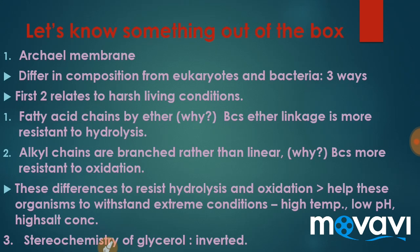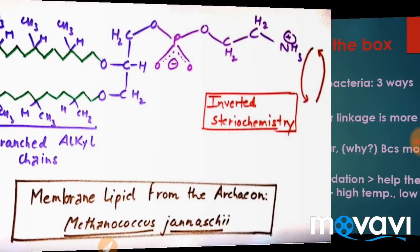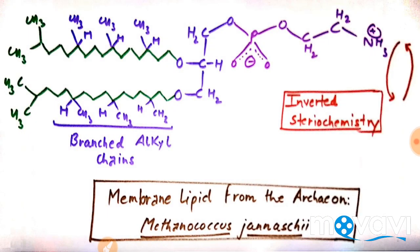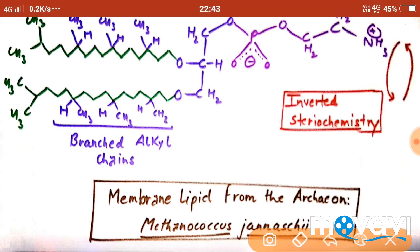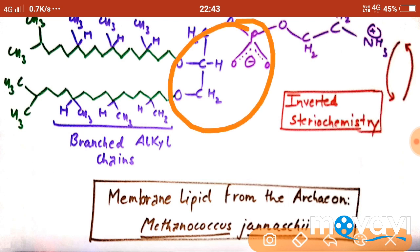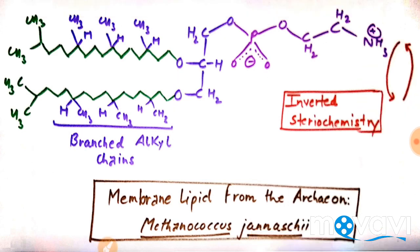Archaea can withstand extreme conditions like high temperature, low pH, and high salt concentrations. Regarding the third difference, it is about the stereochemistry of glycerol. The stereochemistry is inverted — in other phospholipids the phosphate is present below, but in archaea it is present above. This is shown in the red diagram.